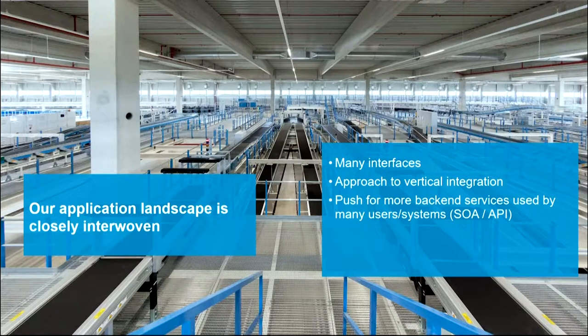We also have what we say in German 'historisch gewachsen' — historically grown systems — because there are a lot of systems that are very much interwoven. We don't have systems organized by business capabilities; they are exchanging a lot of data and are very tightly coupled with many interfaces. With microservices we also want to address having more vertical integration and more shared services — for example, not having point-to-point master data integration going to applications A, B, C, and D, but a single service where you get master data.